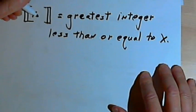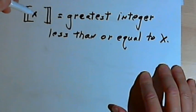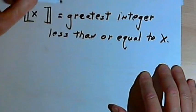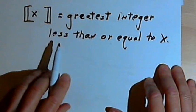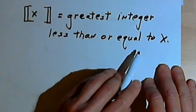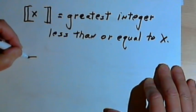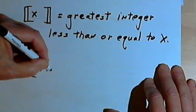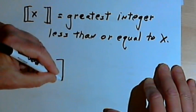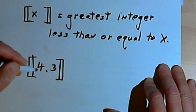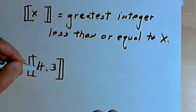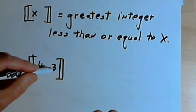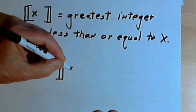As a quick review, remember that the greatest integer function says that the greatest integer value for x is going to equal the greatest integer which is less than or equal to x. So in other words, if I have the greatest integer value of, let's say, 4.3, what I'm looking for is the largest integer which is less than or equal to 4.3. So that would be 4.